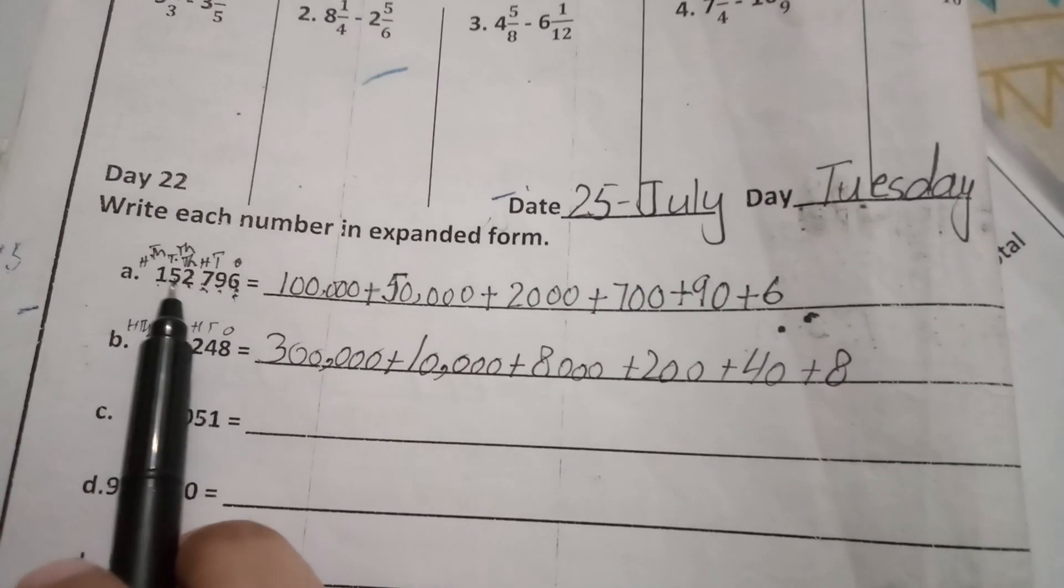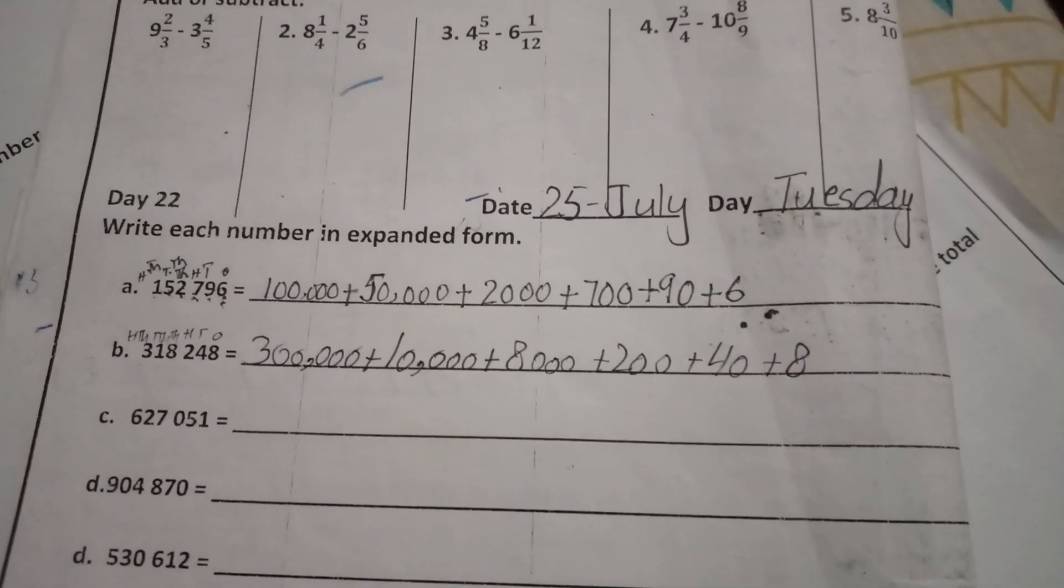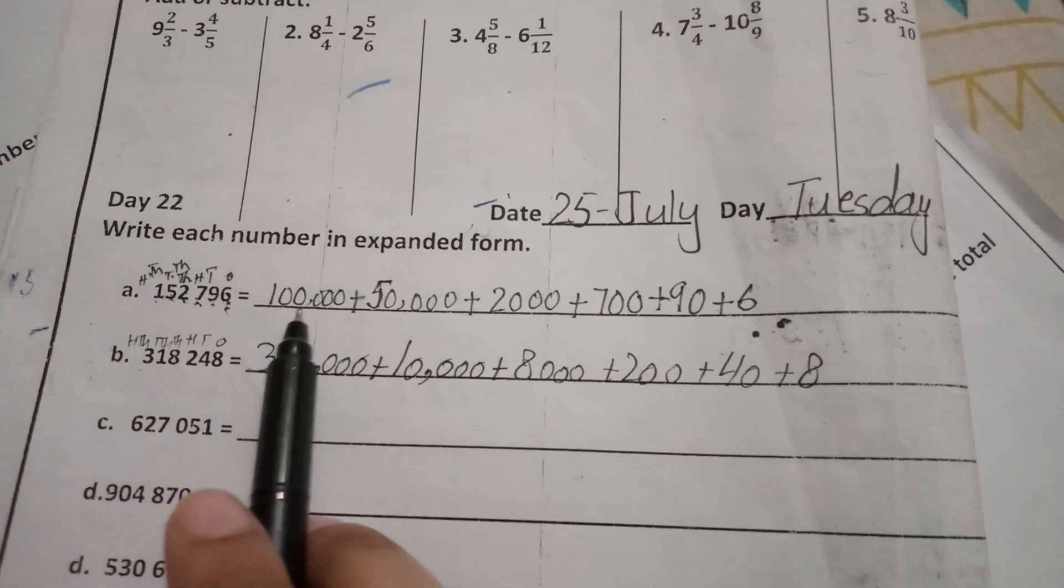Ones, tens, hundreds, thousands, 10,000, and 100,000. What is the name of 100,000? I have written 100,000.